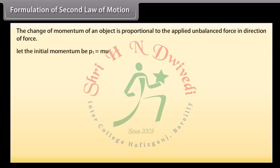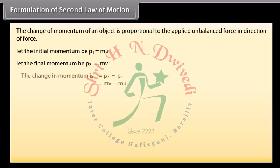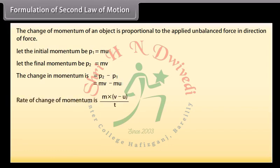Let the initial momentum be P1, which is equal to M U. Let the final momentum be P2, which equals M V. The change in momentum is P2 minus P1, which equals M V minus M U. Rate of change of momentum is M into V minus U whole upon T.